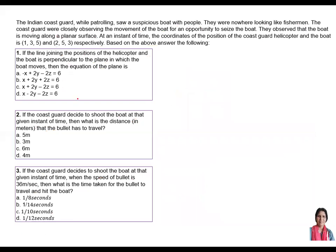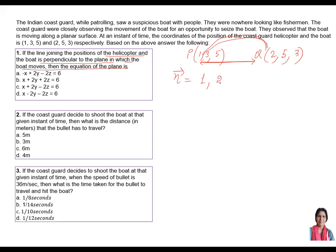So let us go one by one. For part one: if the line joining the position of the helicopter and the boat is perpendicular to the plane in which the boat moves, then the equation of the plane — first, find the normal. The line joining the two points, that is the direction vector, is the normal to the plane.